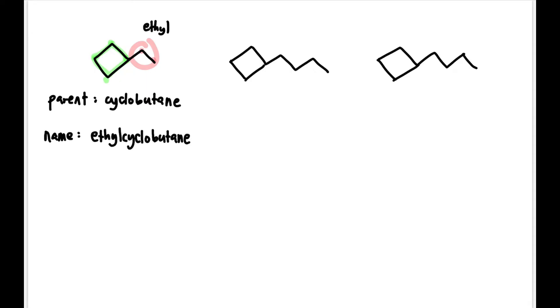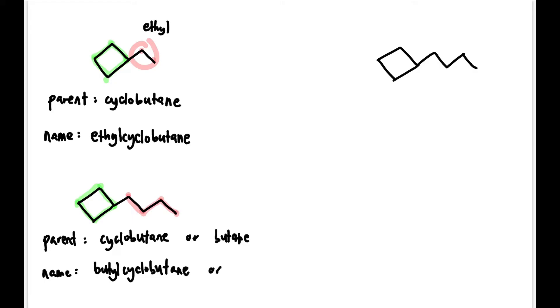The second compound also has cyclobutane with four carbons, and there are also four carbons in the branch. So which is the substituent and which is the parent? We have two options. Either we write the parent as cyclobutane, so the name would be butyl cyclobutane, or we can choose butane as the parent, making it cyclobutyl butane. Both are accepted.